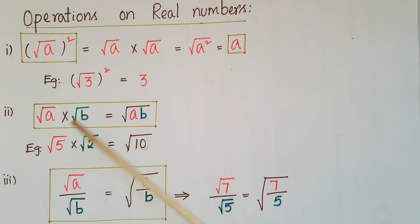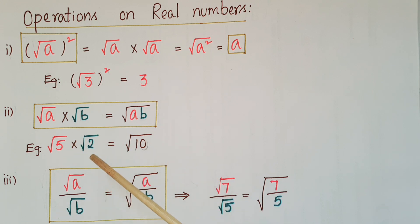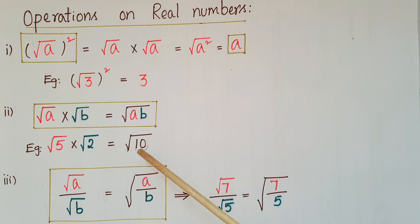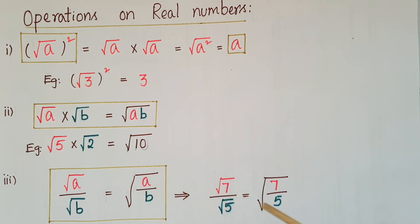The next operation: root a into root b we can write as root of ab. So root 5 into root 2 is equal to root of 5 into 2, that is root 10. The third one: root a by root b is equal to root of a by b. So root 7 by root 5 we can directly write as root of 7 by 5.